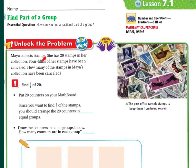Maya collects stamps. She has 20 stamps in her collection. Four-fifths of her stamps have been canceled. How many of the stamps in Maya's collection have been canceled? So, four-fifths of 20, because she has 20 stamps, four-fifths of them have been canceled. We're going to put 20 counters on your math board.